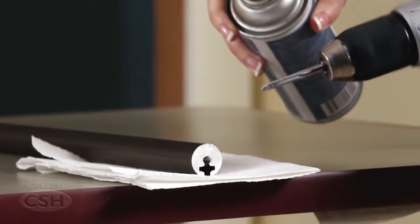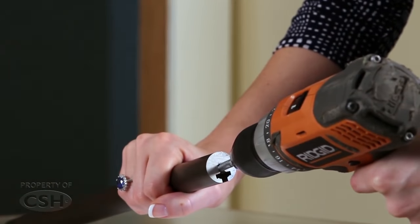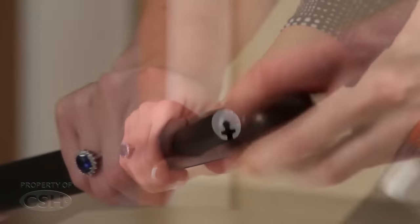Using a quarter by 20 tap and hand drill, tap the ends of the rail for the end caps. Install one of the end caps.